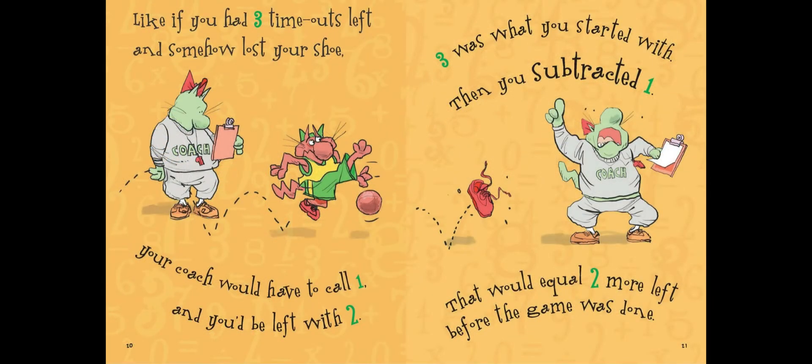Like if you had 3 timeouts left and somehow lost your shoe, your coach would have to call 1 and you'd be left with 2. 3 was what you started with, then you subtracted 1. That would equal 2 more left before the game was done.